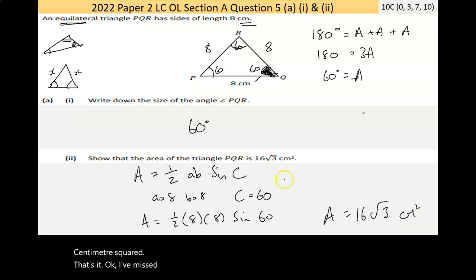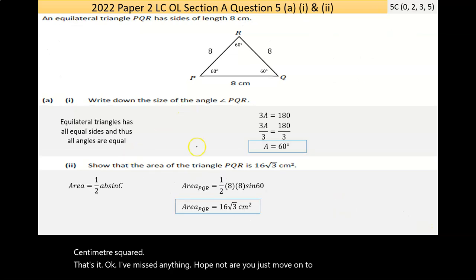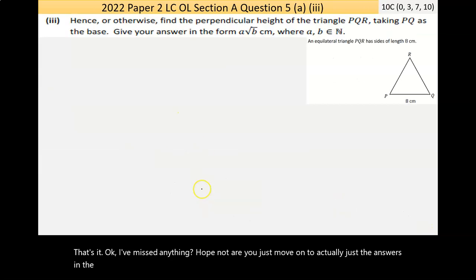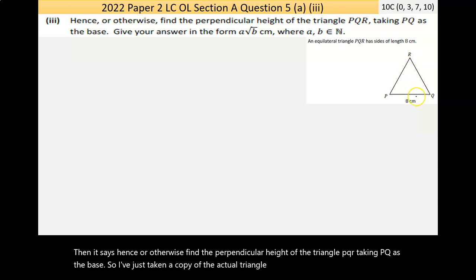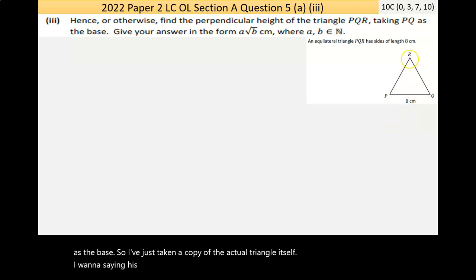So that's it. Let's move on. Then it says, hence or otherwise, find the perpendicular height of the triangle PQR, taking PQ as the base. So I've just taken a copy of the actual triangle itself. And what it's saying is find this particular height here. Now remember that was 60 here, and that was 60. So the question is, how do we find this height here? Now if this is splitting straight down the middle, if it's equilateral, that's going to have side 4 and side 4, and that's the trick.